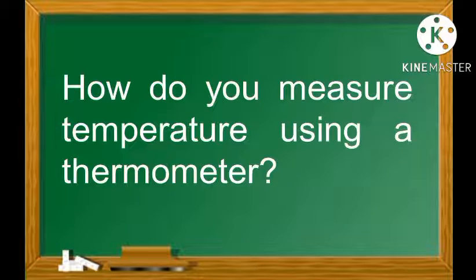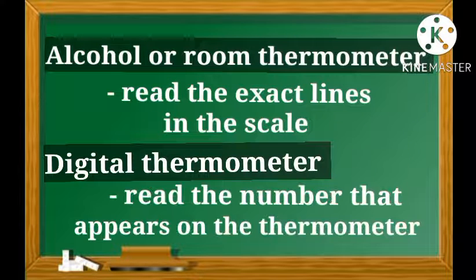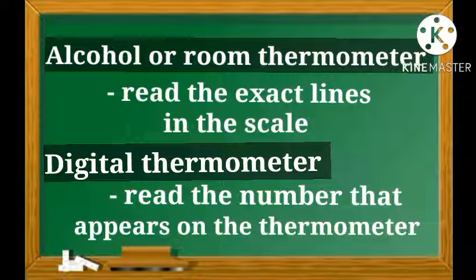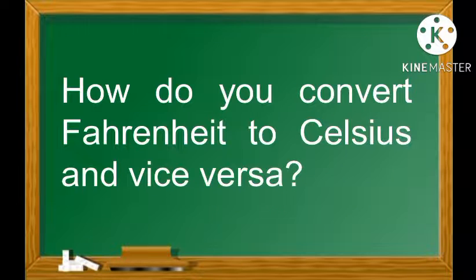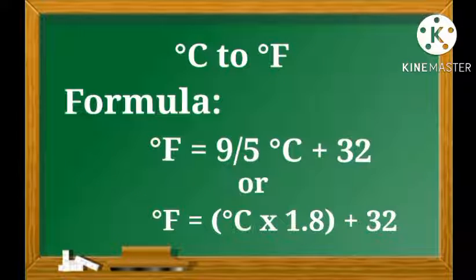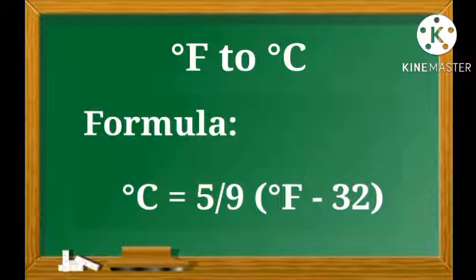How do you measure temperature using a thermometer? If you're using an alcohol or room thermometer, read the exact lines on the scale. If you're using a digital thermometer, read the number that appears on the display. To convert Celsius to Fahrenheit, use: °F = (9/5)°C + 32, or °F = °C × 1.8 + 32. To convert Fahrenheit to Celsius, use: °C = (5/9) × (°F − 32).